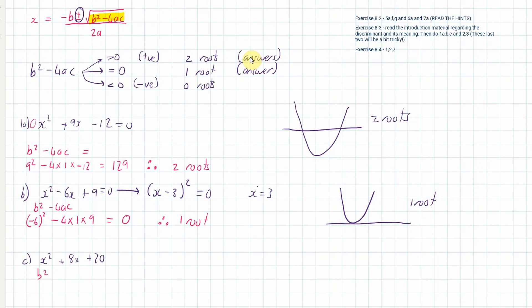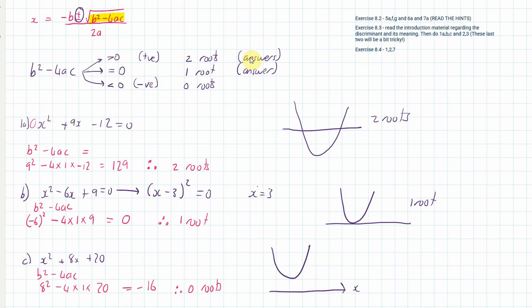Using b² − 4ac: 8² minus 4 times 1 times 20 = 64 minus 80 = negative 16. Since it's less than zero, that's zero roots — no answers. The quadratic function won't cross the x-axis at all. That's a little introduction to the discriminant.